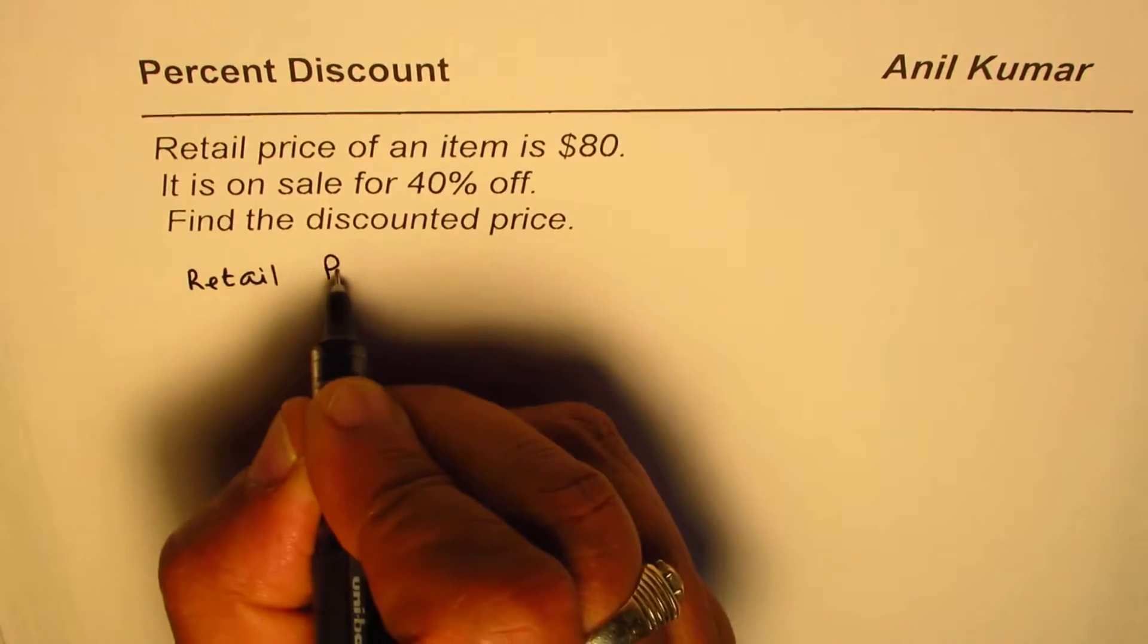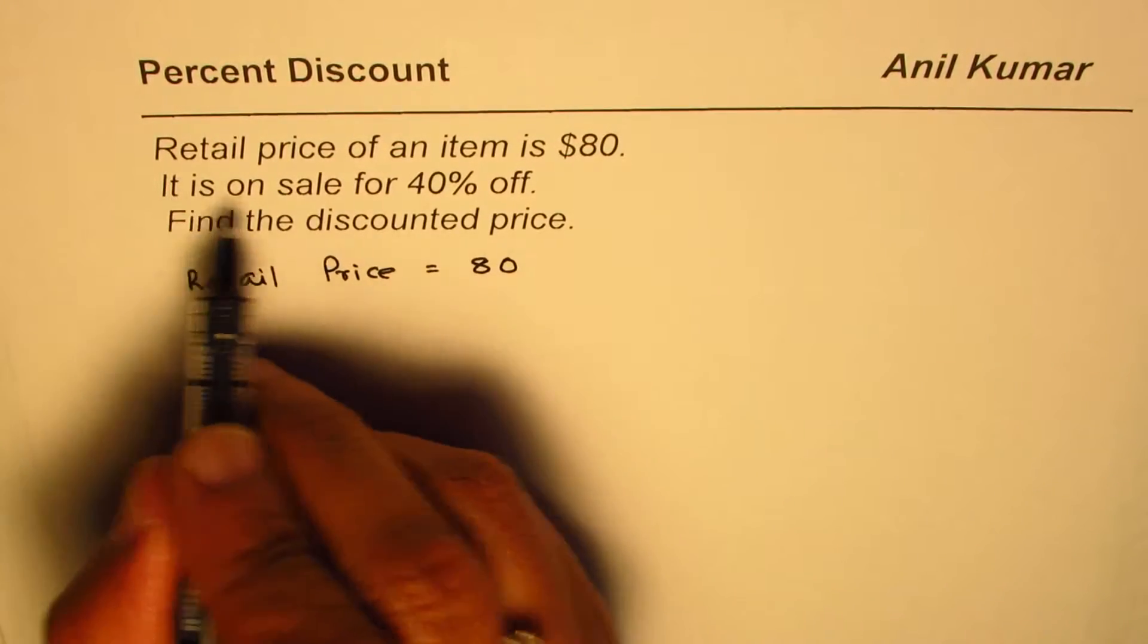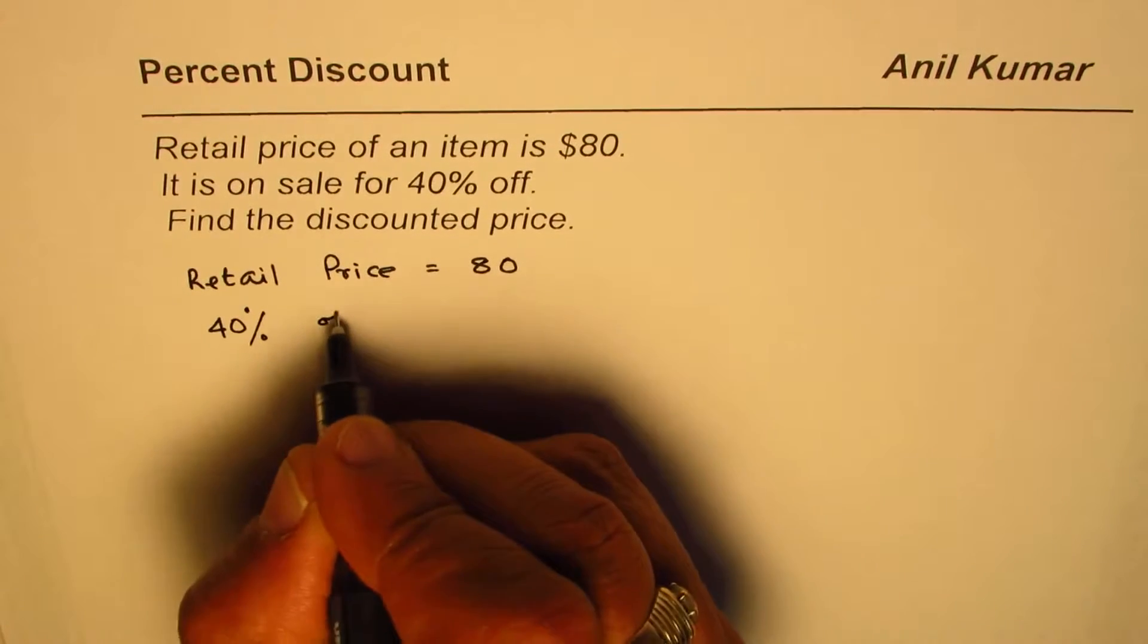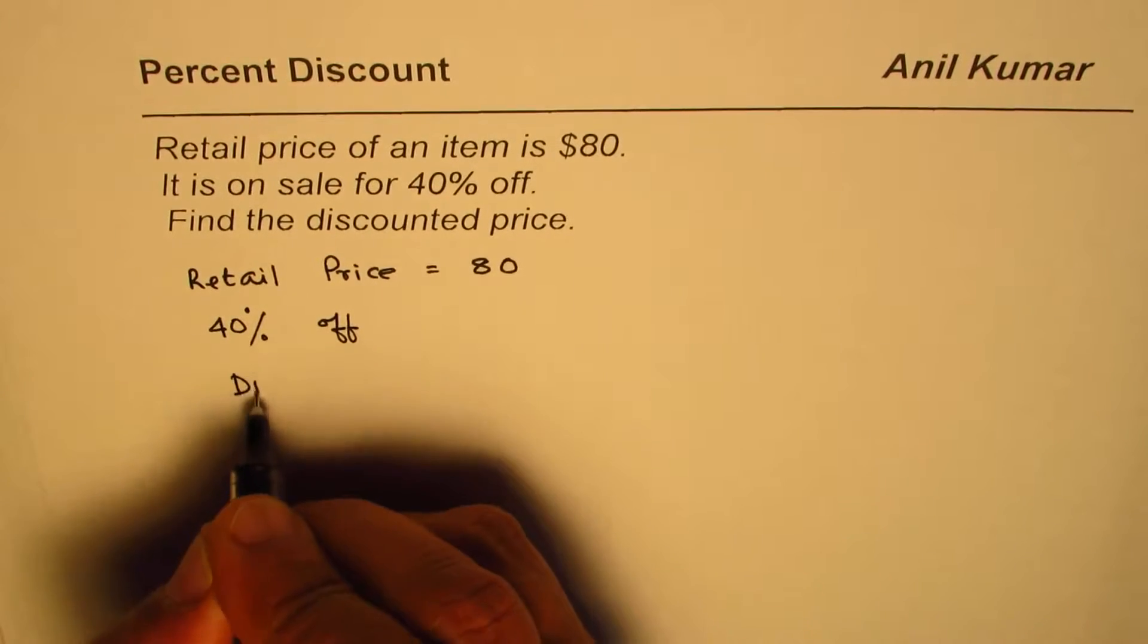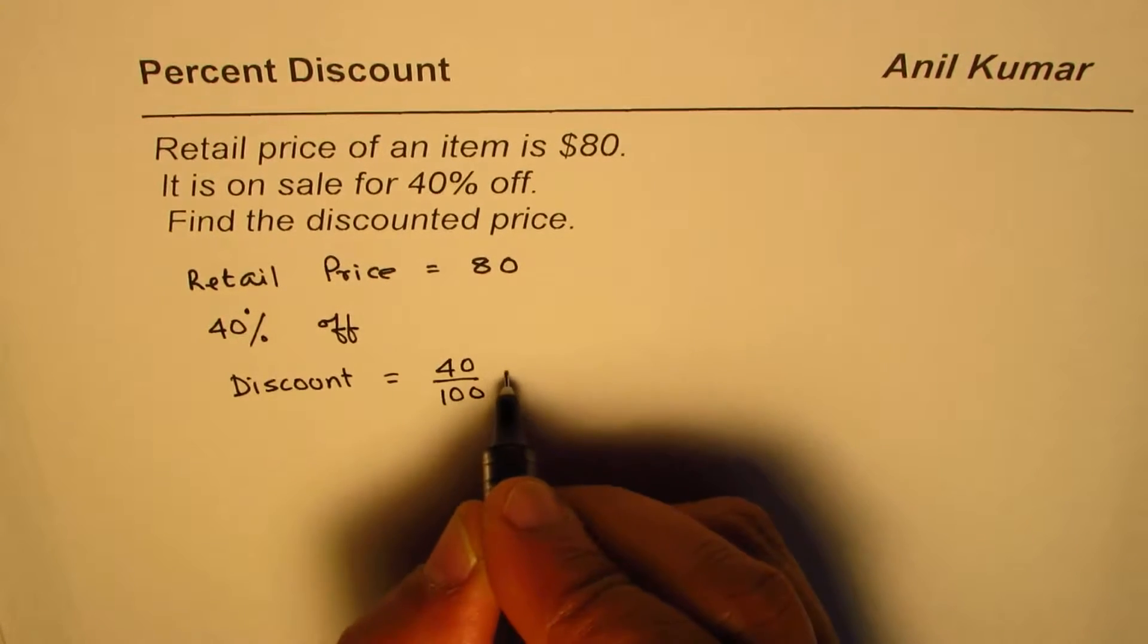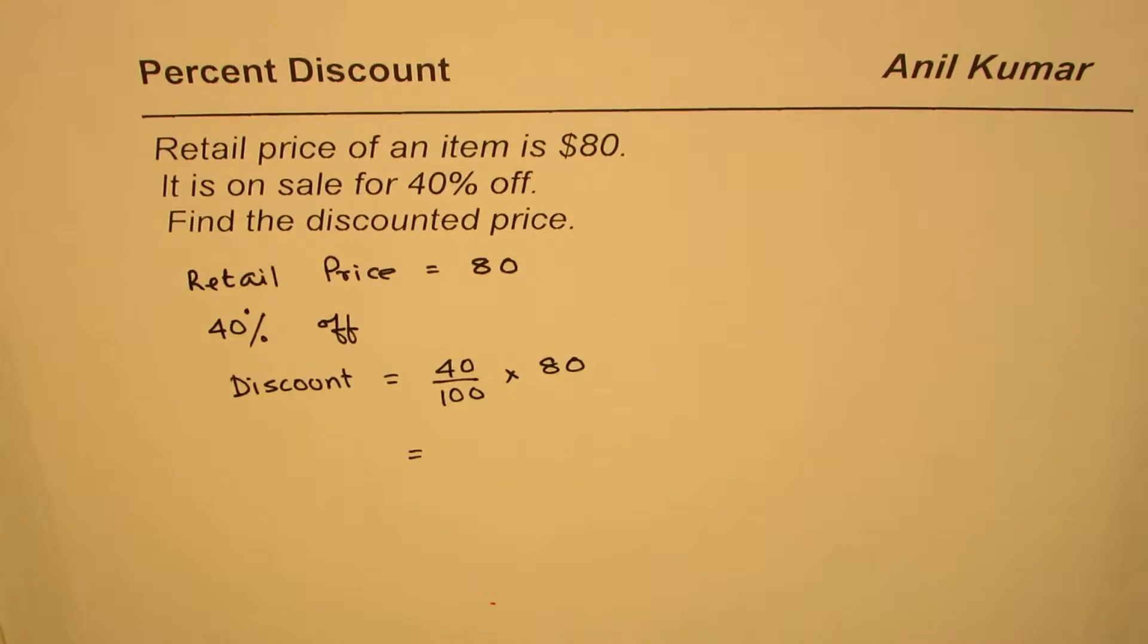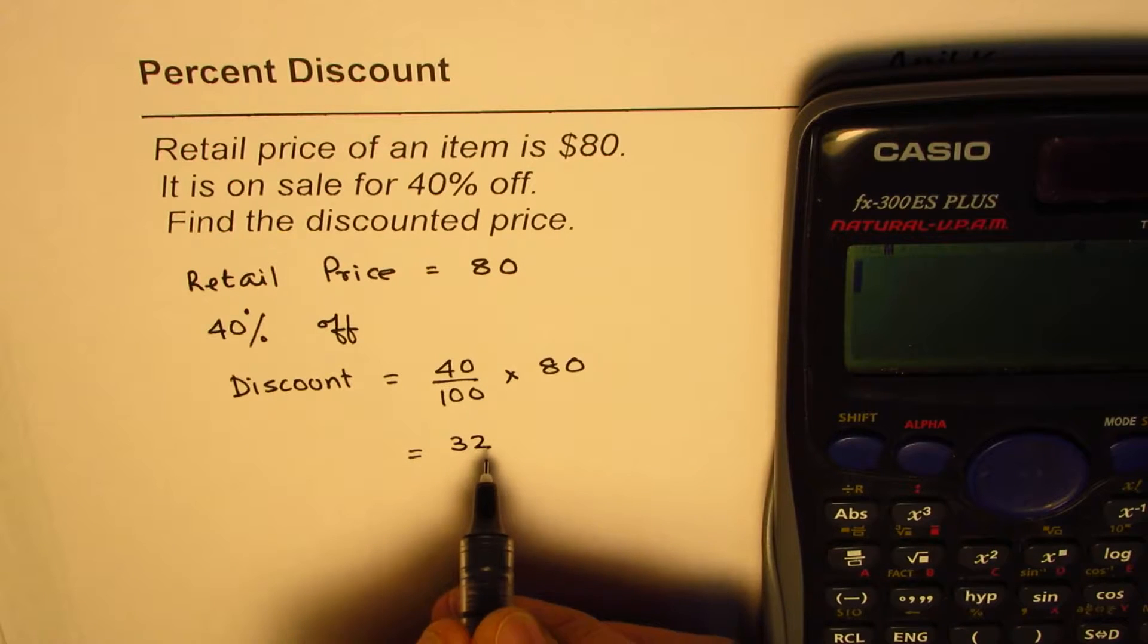It is on sale for 40% off. 40% off what? 40% off of retail price. So we have a discount here which equals 40%, that is 40 over 100 of the retail price which is $80. Let's calculate this: 40 times 80 divided by 100. These two zeros cancel, so it is $32.